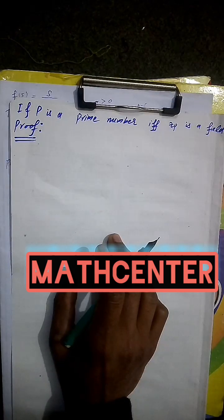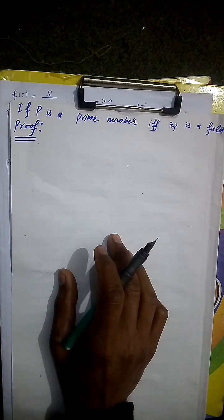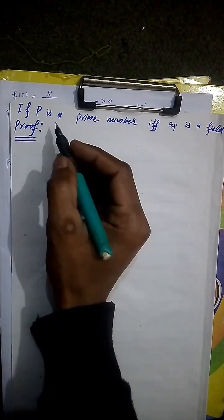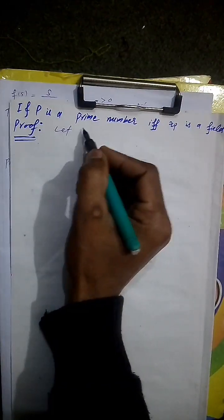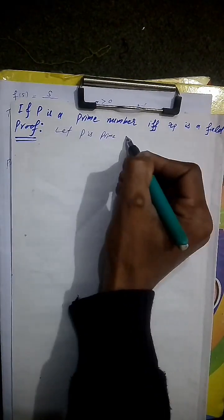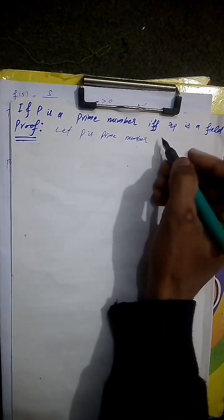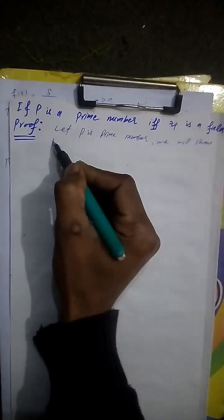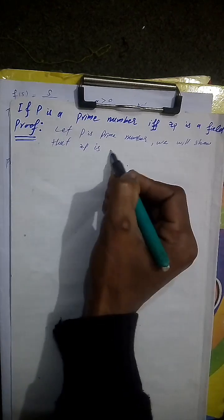Bismillahirrahmanirrahim. If p be the prime number, let it be the field. Then start, let be the prime number. We will show that Zp is a field.